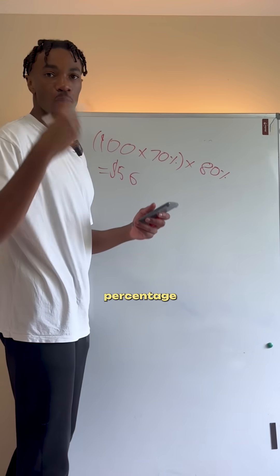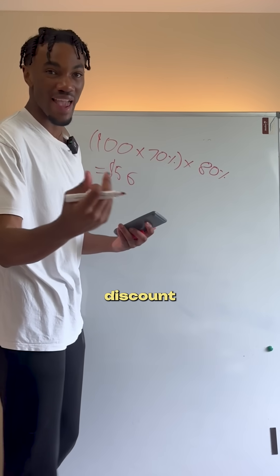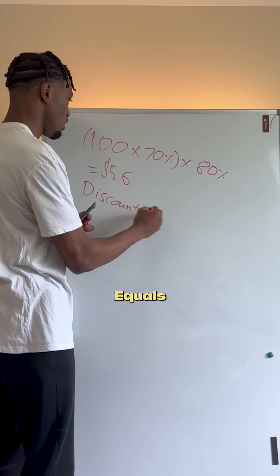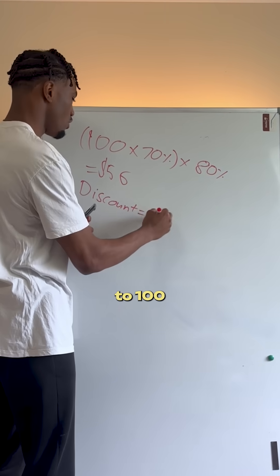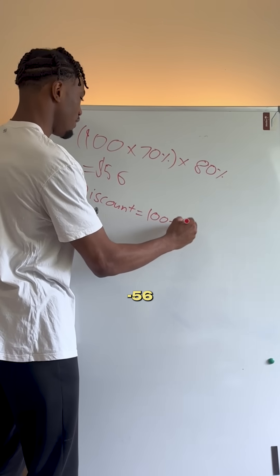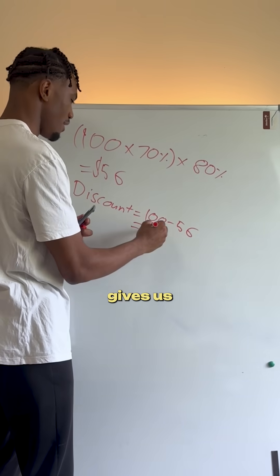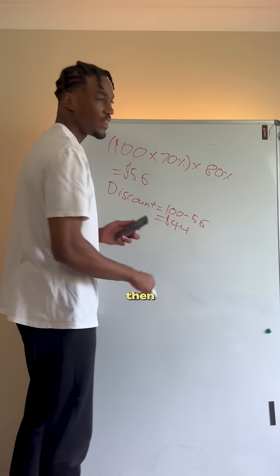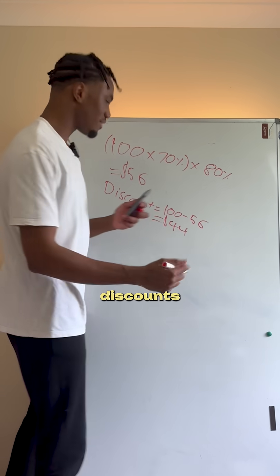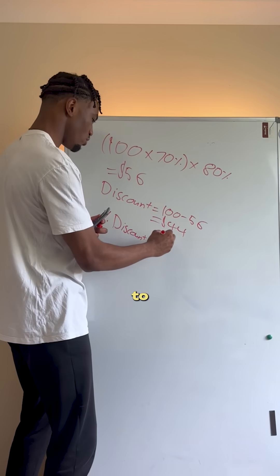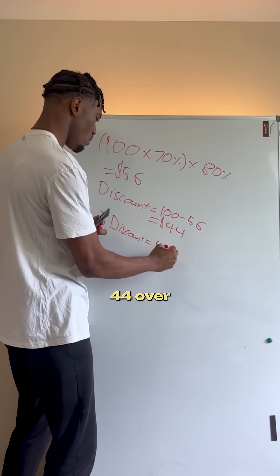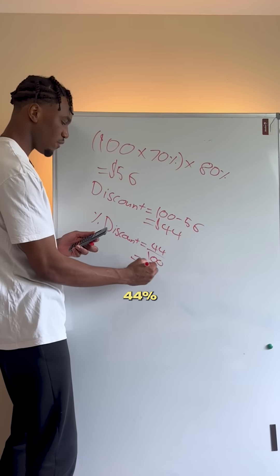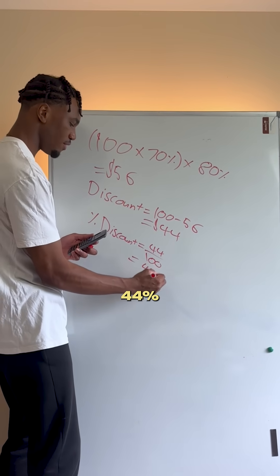Now we calculate the total percentage discount — how much was it discounted by? 100 minus 56 gives us 44, and the percentage discount equals 44 over 100, which gives us 44%.